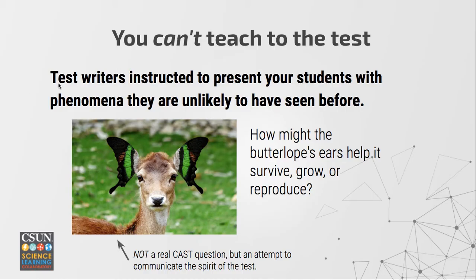We can't teach to this test, because the test writers were explicitly instructed to present students with phenomena they're unlikely to have seen before. Here's a joke example — not a real CAST question — but it communicates the spirit: students might be shown a picture and asked 'How might the butterlope's ears help it survive, grow, or reproduce?' Your students have never seen a butterlope before because it doesn't exist.